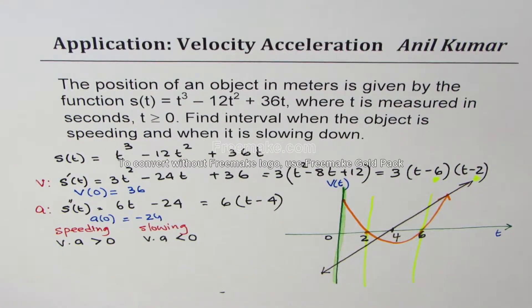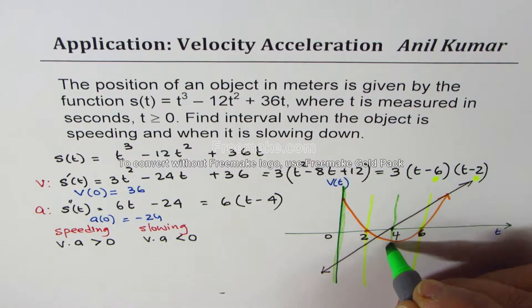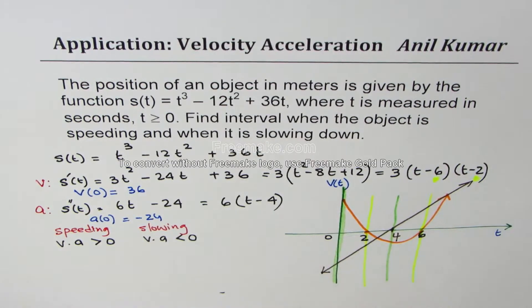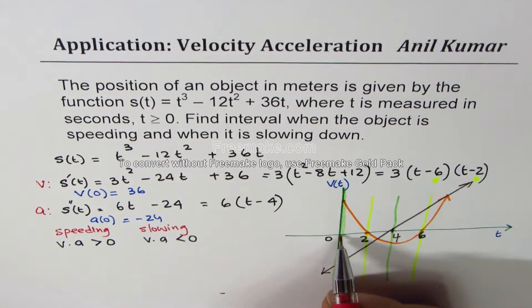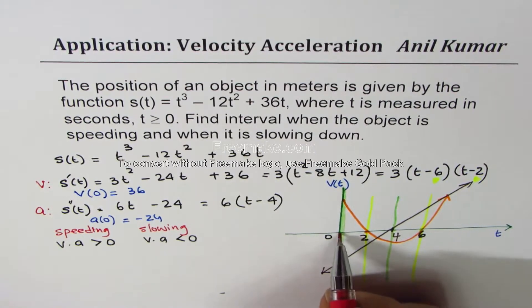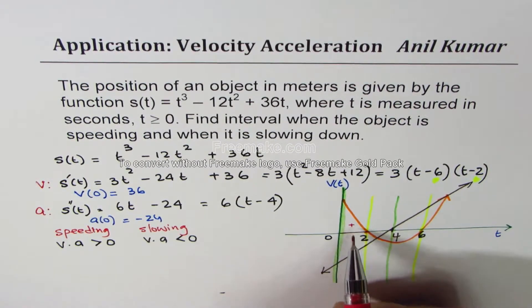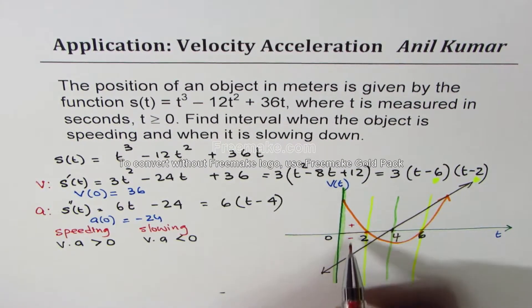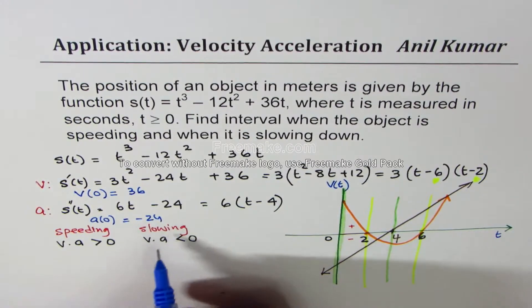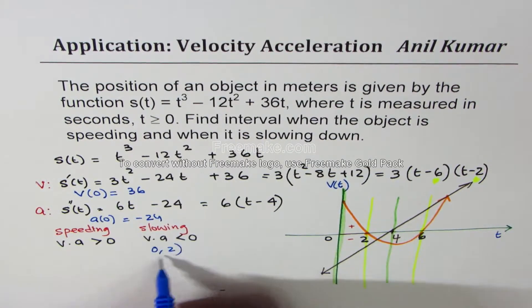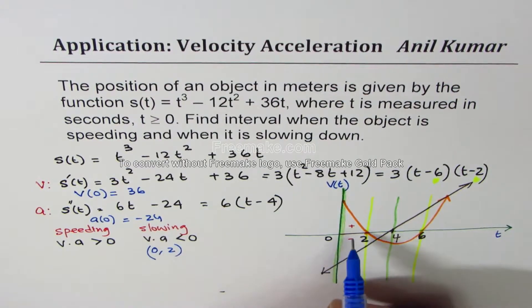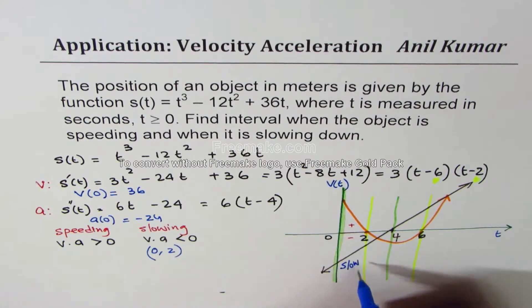Now I think it is easy to figure out when is the object speeding and when is the object slowing down. So that gives you 4 different intervals. Let's analyze one by one. In this interval from 0 to 2, what do you observe? In 0 to 2, we have positive and negative values. Opposites. So that means slowing down. So it is slowing down between interval 0 and 2. Since velocity is positive and acceleration is negative, we'll write slow.